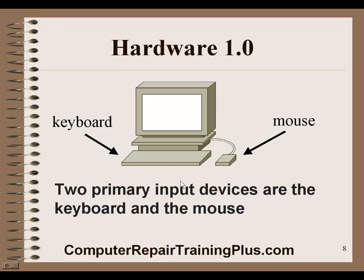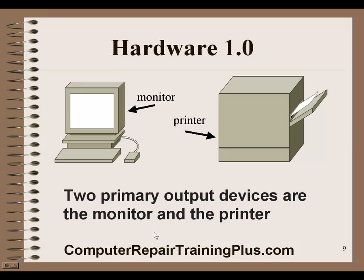Here's an example of a computer. We've got the keyboard in front and the mouse, usually on the right-hand side — these are the two primary input devices where we input data into the computer. The two primary output devices are the computer monitor, where we see information, and the printer, where we can print hard copies.